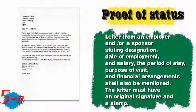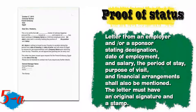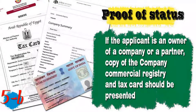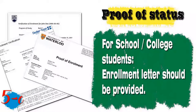Number five, you will need a proof of status. It varies: if you are an employee or work in a company, you will need a letter from an employer or HR office stating your designation, date of employment, salary, period of stay, purpose of visit, and financial arrangements. The letter must have an original signature and a stamp. If you are an owner or partner in a company, you will need a copy of the company commercial registry and tax card.